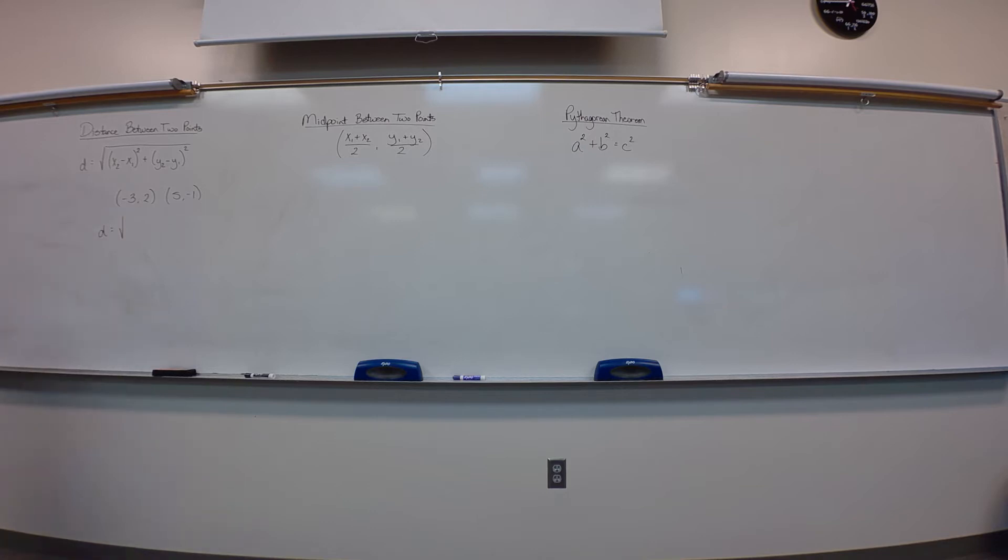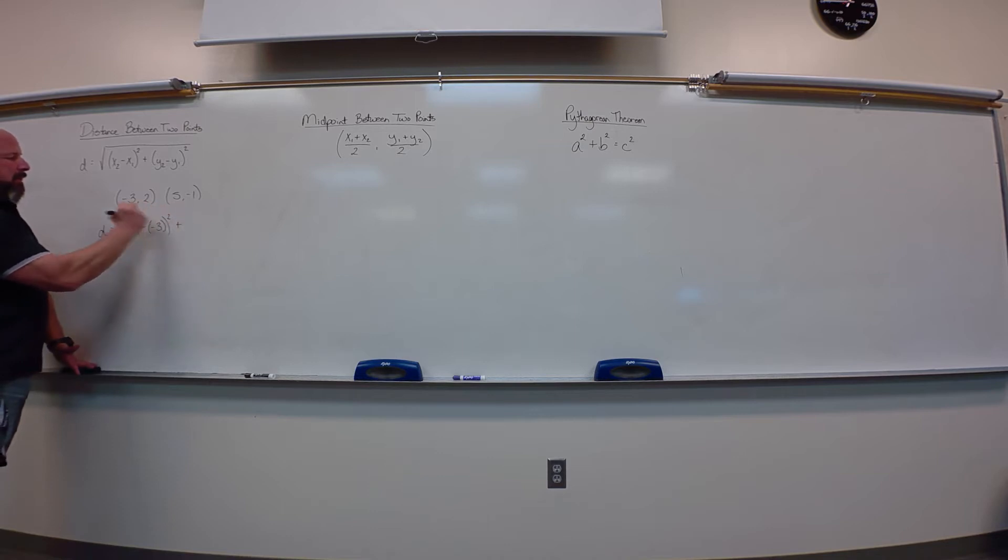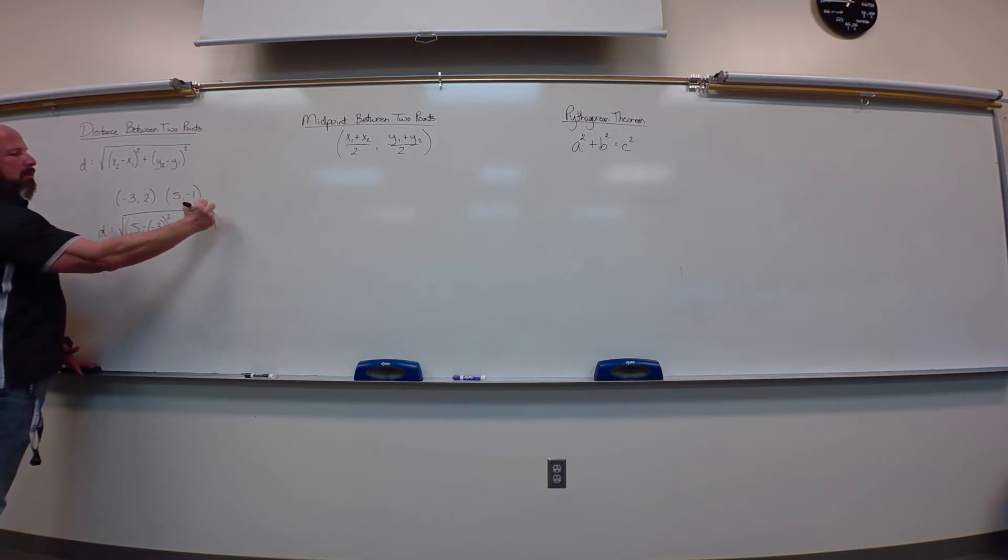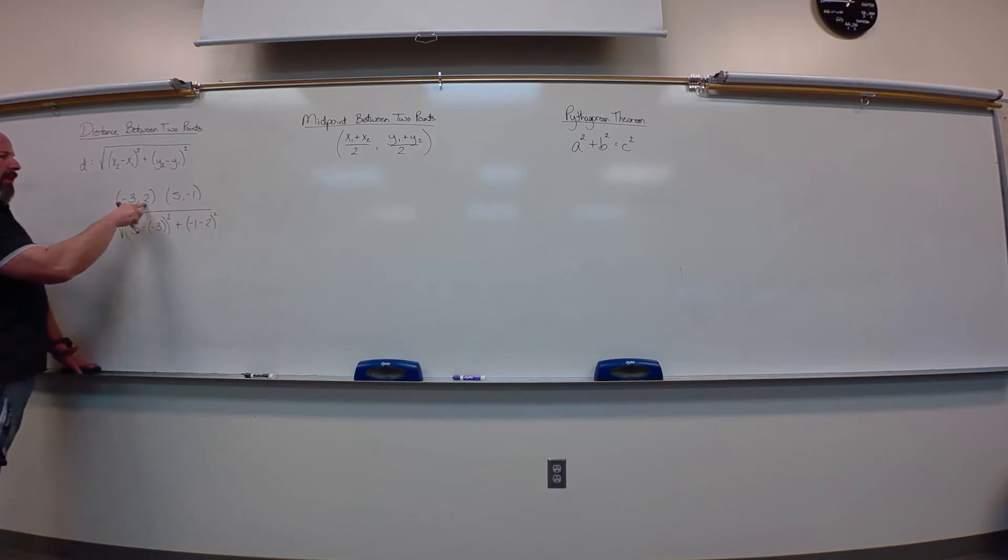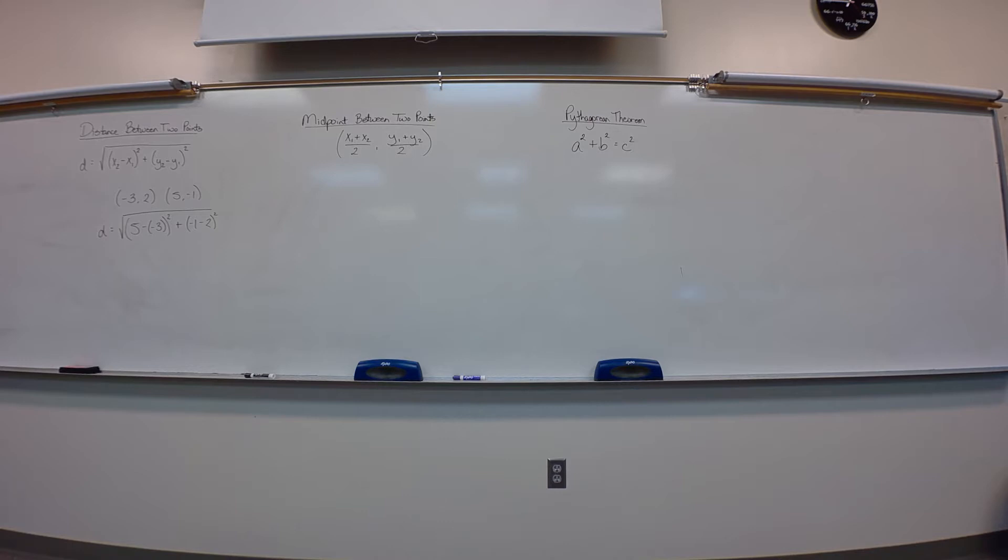So, second X, five, minus negative three. So second minus first squared, plus second Y is negative one, minus two squared. So, second Y minus first Y squared, and then the rest of it's just simplifying. So, the computation part isn't too bad. The negatives give you a fit. You've got a calculator.